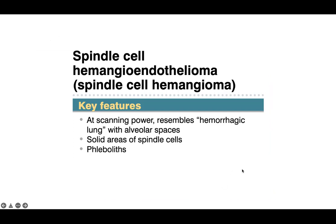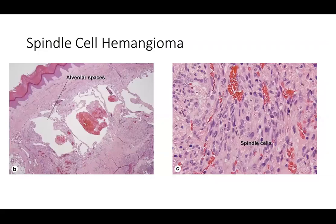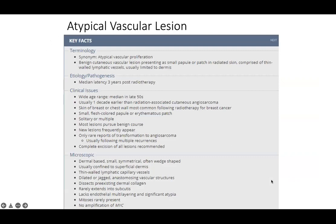At scanning power, spindle cell hemangioma resembles a hemorrhagic lung with alveolar spaces, solid areas of spindle cells, and phleboliths. You'll find collections of thrombi or phleboliths, diffuse erythrocytes within ectatic walls, and a spindle cell proliferation at the outer edges of these dilated alveolar-like spaces. More examples show those alveolar-like spaces with thrombi scattered throughout and the spindle cell proliferation surrounding them.